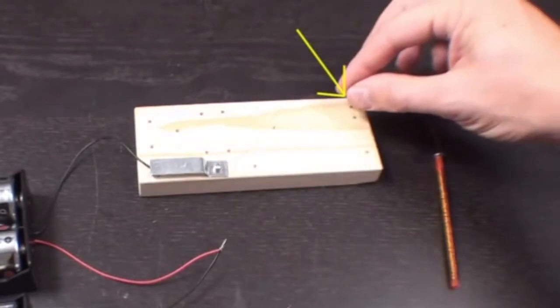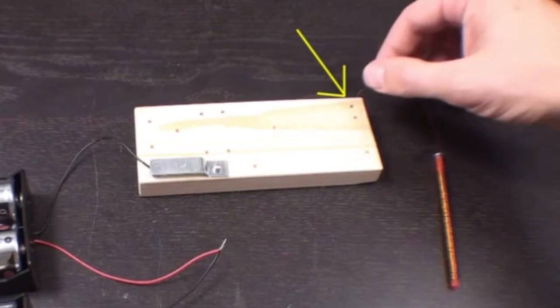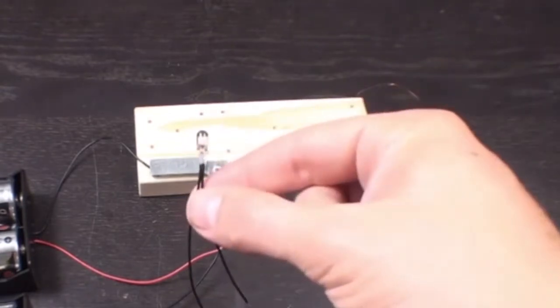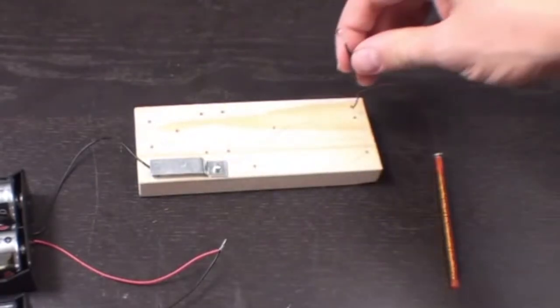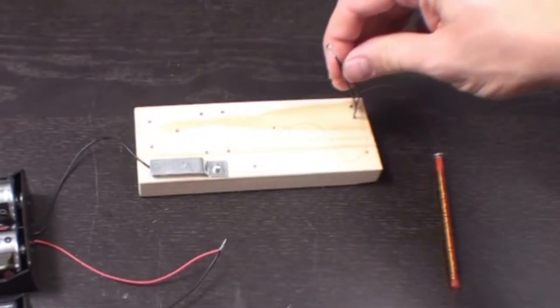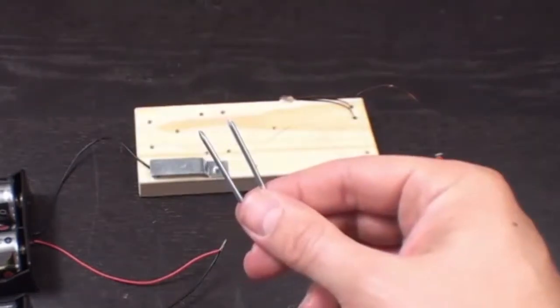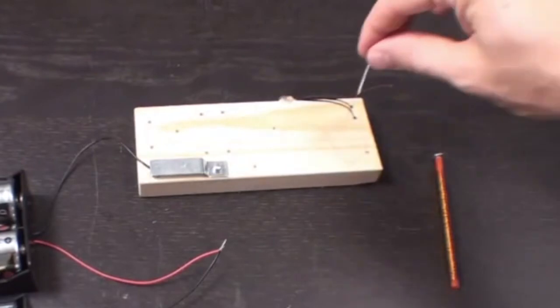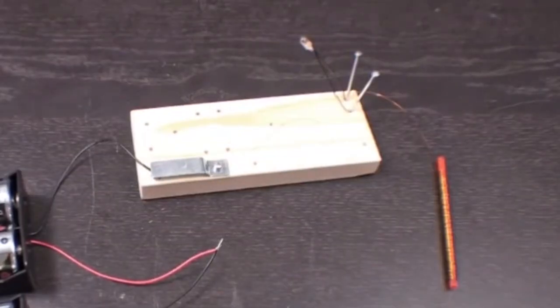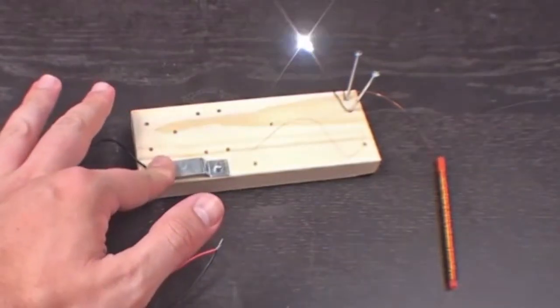Place the new leads into the two holes at the opposite corner of the wooden block. Take the light bulb and place each lead into the holes. Now place two small nails into the holes to secure the connections. Press the sheet metal down to complete the connection and see if the light comes on.